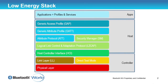In terms of the low energy stack, this is a similar diagram except we've changed a few of the labels. Instead of the baseband and link manager, we now have the link layer. And instead of things like RFCOMM, we've now got attribute protocol and attribute profile.